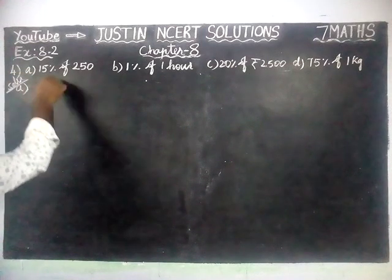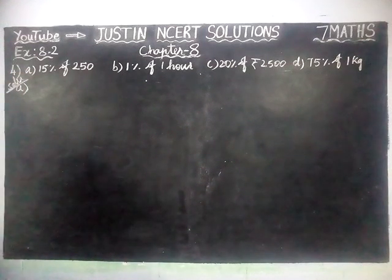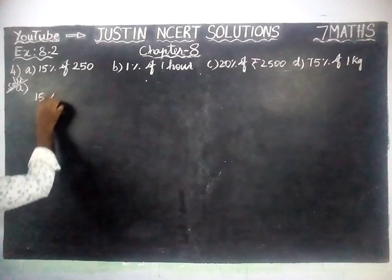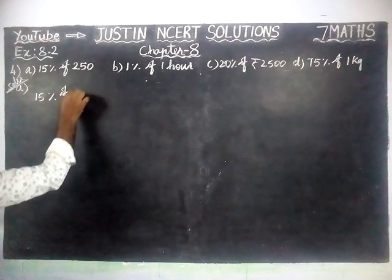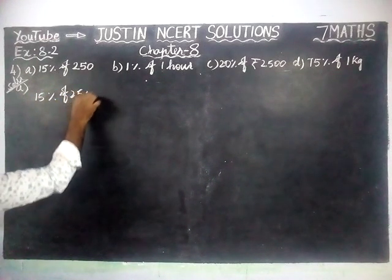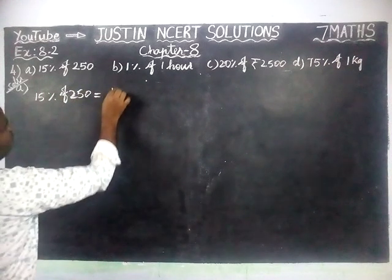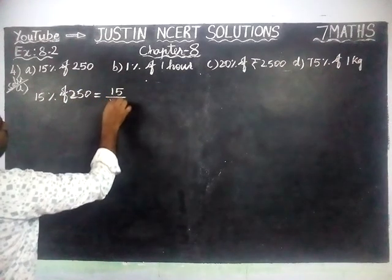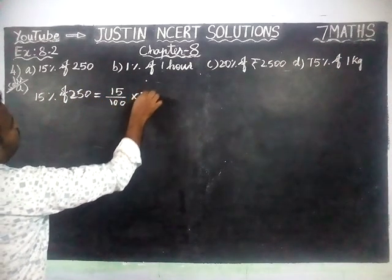Part A: 15% of 250. So, first we are going to find it. 15% of 250 is equal to 15 divided by 100 into 250.